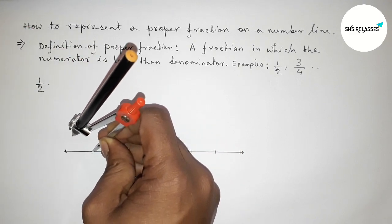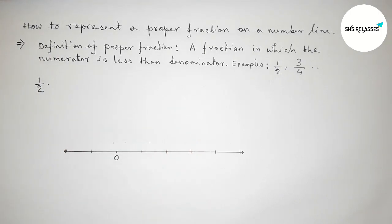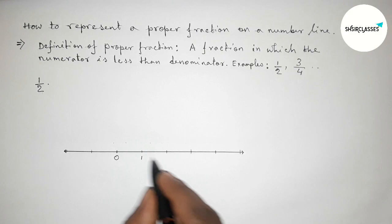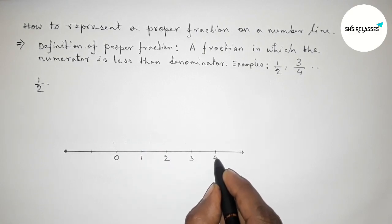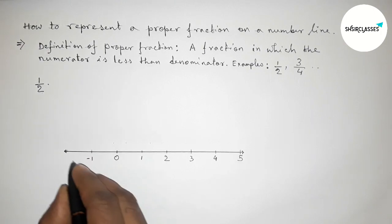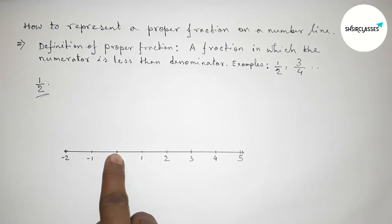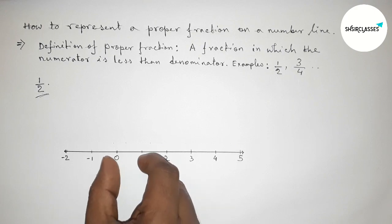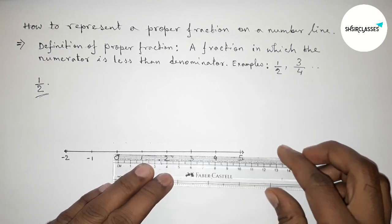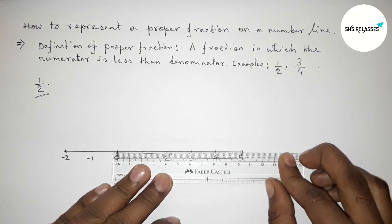After 0, mark 1, 2, 3, 4, 5 and continuing, and on the other side minus 1, minus 2 and continuing. This is a number line. Now representing 1 by 2 on this line — 1 by 2 lies between 0 and 1.